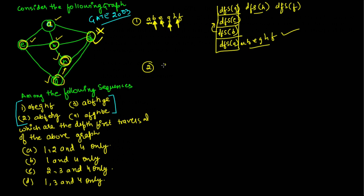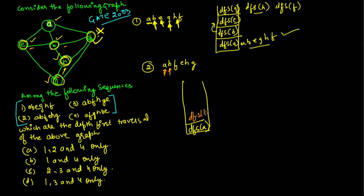Now let us check option two. The sequence is A, B, F, E, H, and G. Initially we call DFS on A; the adjacent vertices are E, B, and F, so we can call any one. Here they called DFS on B. When we call DFS on B, the adjacent vertices are E and F (A is already visited). We can choose either, and here they have chosen F, so we call DFS of F.